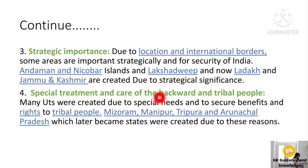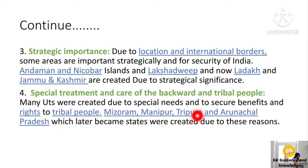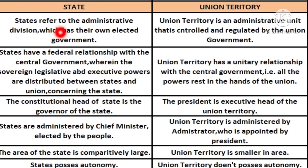The fourth reason is special treatment and care of backward and tribal people. Many union territories were created due to special needs and to secure the benefits and rights of tribal people. For example, Mizoram, Manipur, Tripura, and Arunachal Pradesh, which later became states, were created due to these reasons.